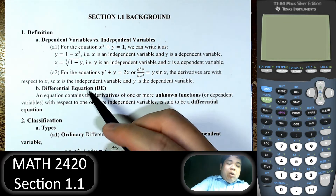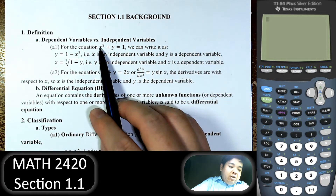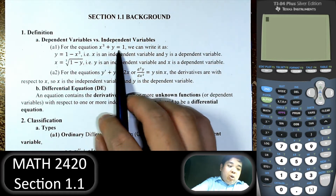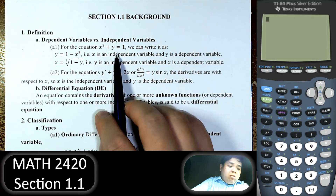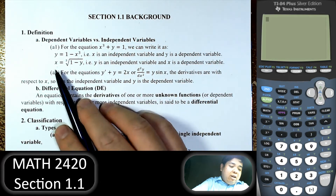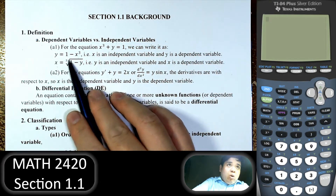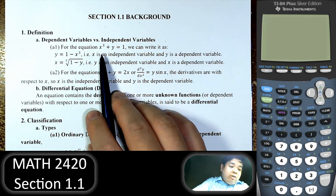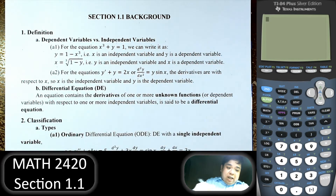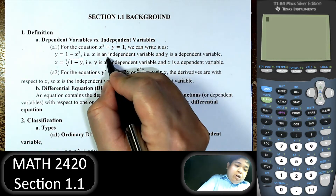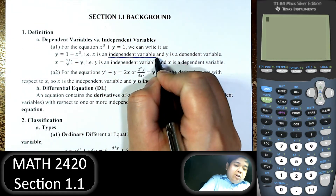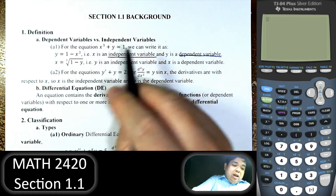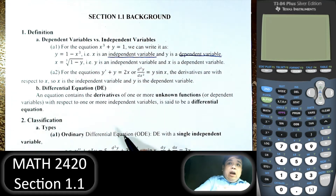So what we have is a differential equation — we have an equation. For the equation we may have y equal to something, in which case we say y is a function of x. So x is the independent variable and y is the dependent variable, meaning that y depends on x.